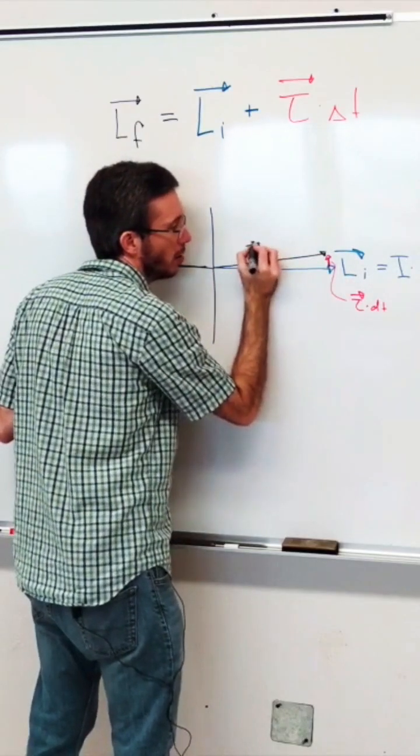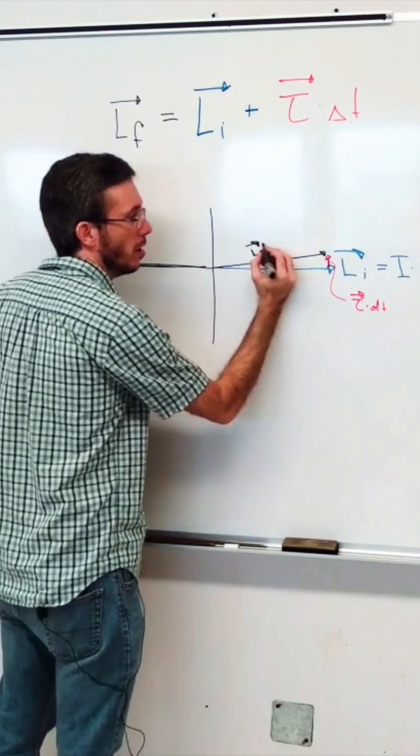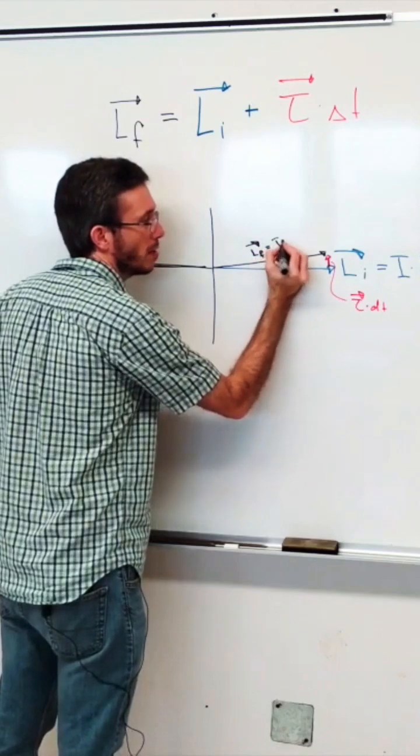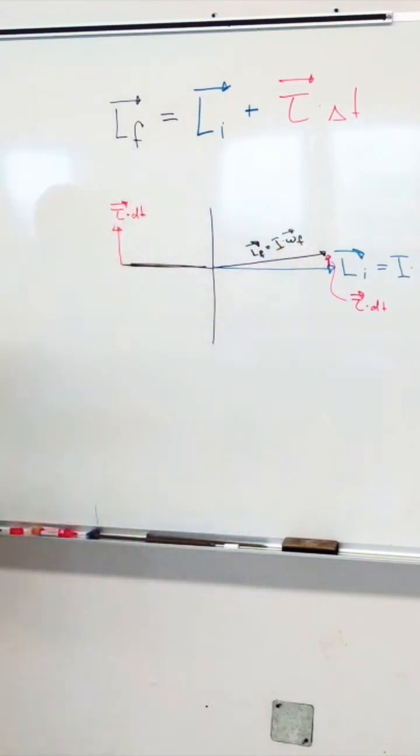My L final here. And the only way to have an L final pointing in that direction is for my axis of rotation, for my omega final, to shift slightly to the left.